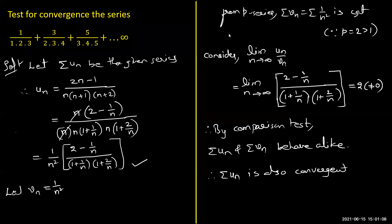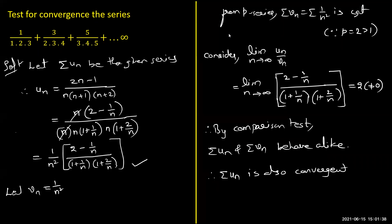You will get two questions from different topics/methods, and you need to identify the suitable technique and conclude. From the chat box: in the comparison test, if you get the limit as zero — the limit must be finite and nonzero — then we cannot find the convergence of this series using the comparison test. We will try it by other methods, but comparison test cannot be used if the limit is zero.